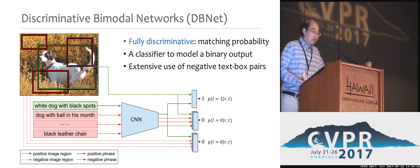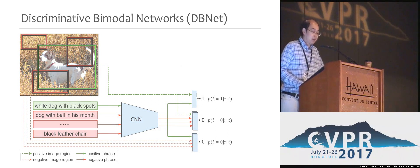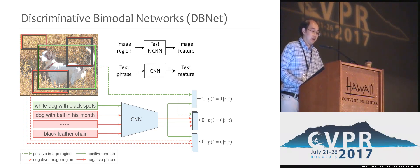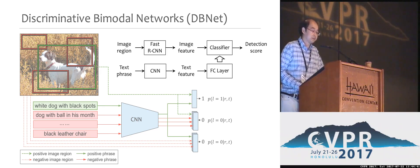Technically, we use a Faster RCNN baseline to extract the image features, and we use a character-level CNN to extract the text features. A binary classifier for the image feature is then generated dynamically based on the text feature.